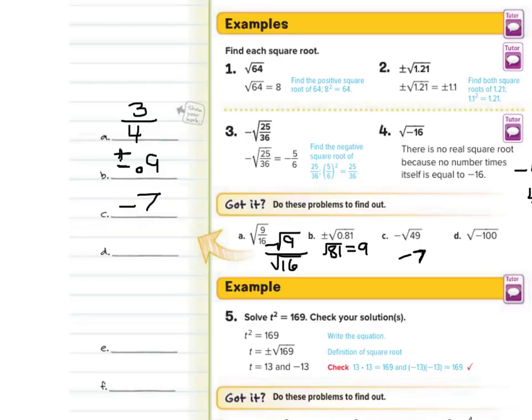And the square root of negative 100 — there is no real solution, because nothing times itself is going to be negative 100.